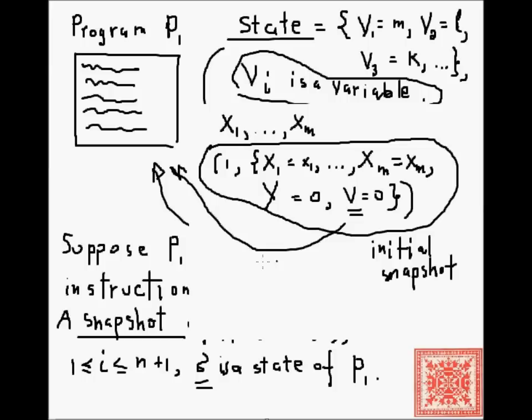The first instruction is about to be executed, all of the input variables are specified, the value of Y is zero, and every other variable is zero. Then there's another type of snapshot: n plus one, where i equals n plus one and for some state σ, this is the terminal snapshot because the instruction to be executed is n plus one.